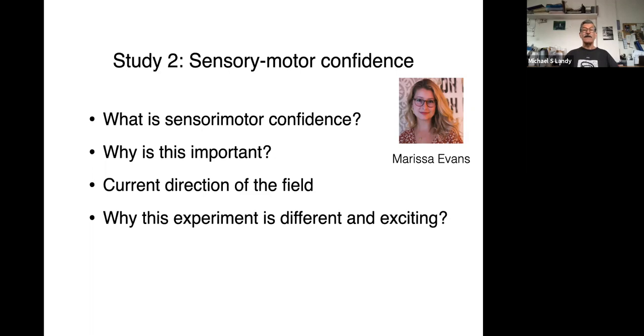Now, most of the field of metacognition looks at confidence judgments in perceptual or cognitive judgments that are typically binary decisions. Was it there or not? Was it clockwise or counterclockwise? Whereas a motor response is a continuous response and has a continuous valued error. And so that makes this quite a different kind of judgment qualitatively than what most of the field has studied.